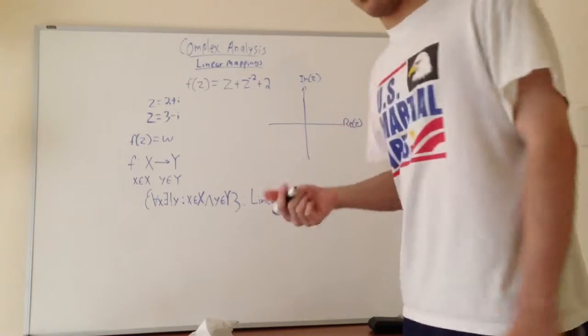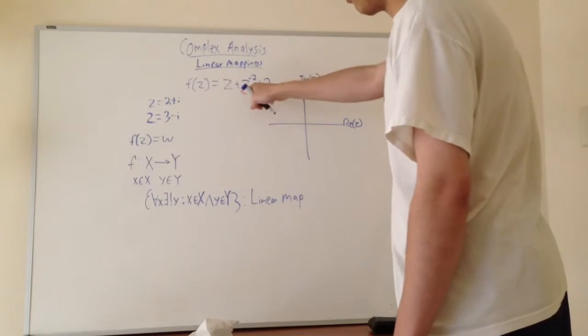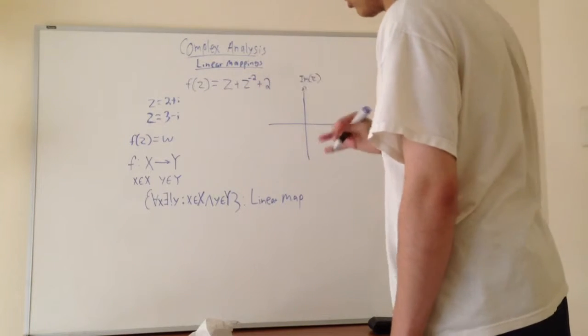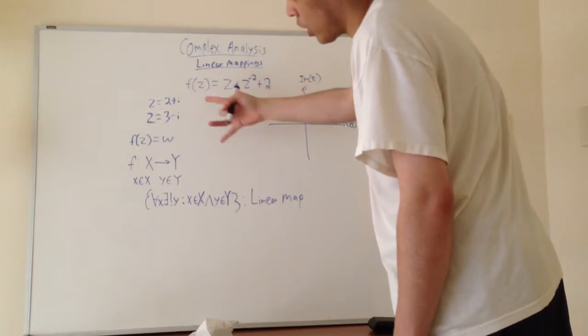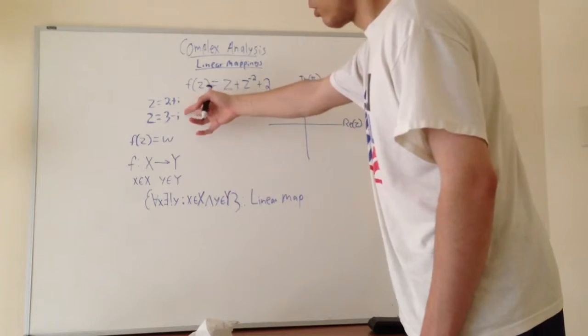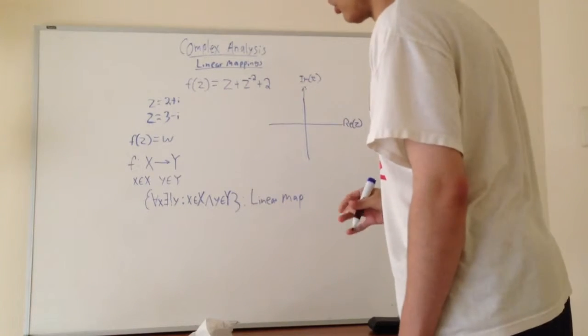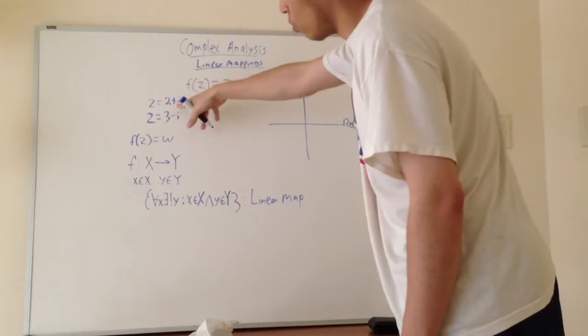So basically, how do I make use of this? Let's say I have a function like this, where I have z plus z to the negative 2 plus 2. And let's say that I wanted to find what the image of that is—or I should say the image, because we're only dealing with a few complex numbers here. So let's say, what if I wanted to know the image of 2 plus i?